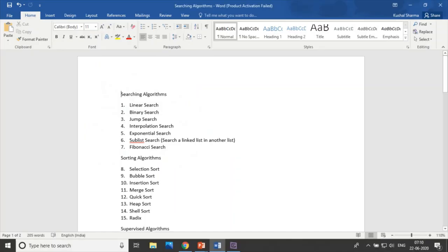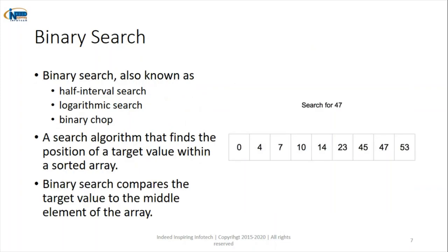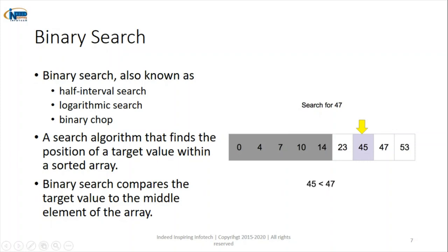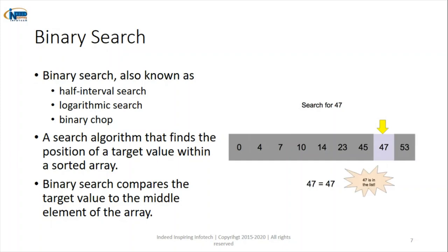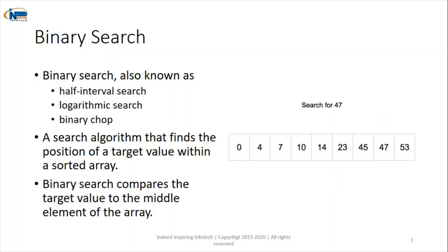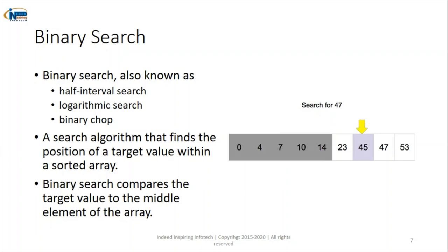Let's move to the second algorithm, which is binary search. Binary means two. It is a half-interval search — we go to the half of the list and compare whether what we are searching is present on the left-hand side or the right-hand side. The left-hand side contains smaller values and the right-hand side larger values. If the element is present on the right-hand side, we skip all left-hand side elements. This is binary search.